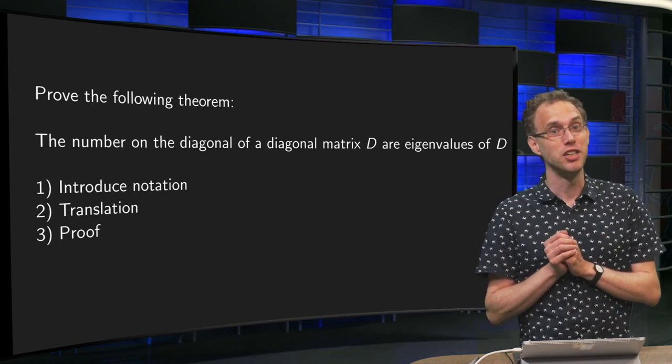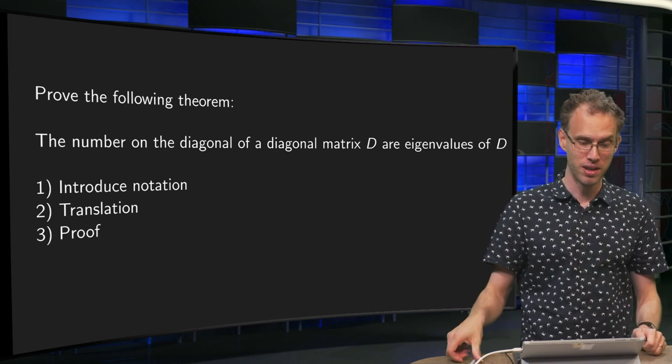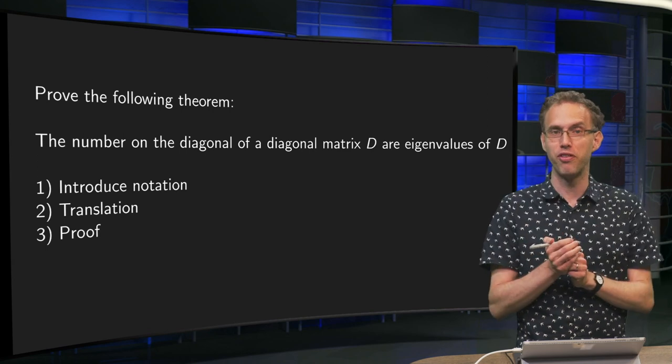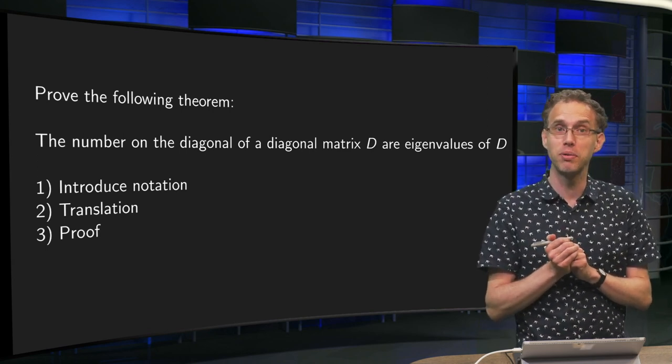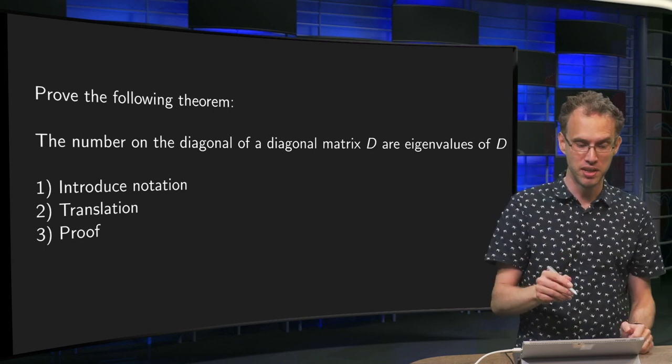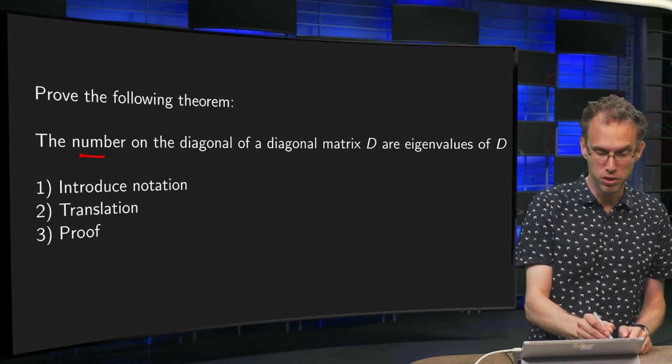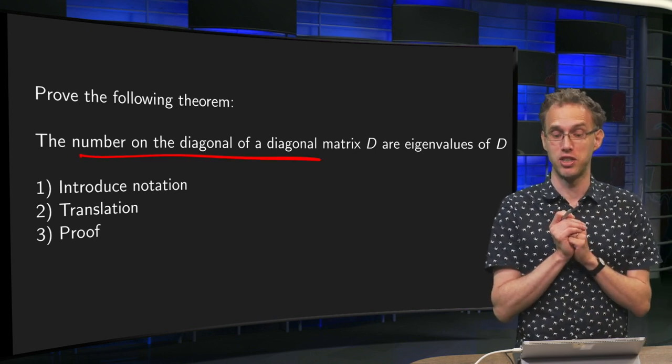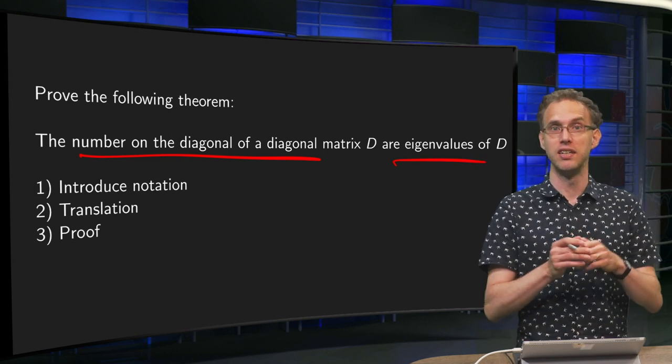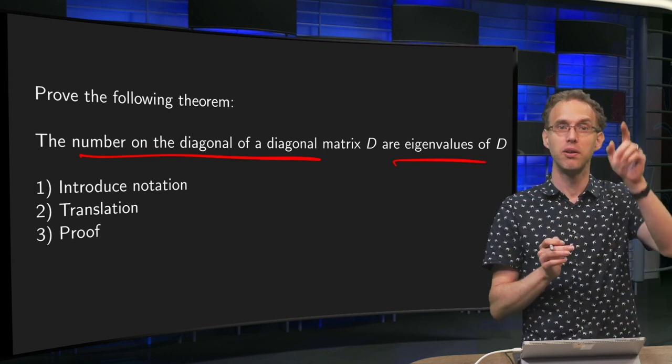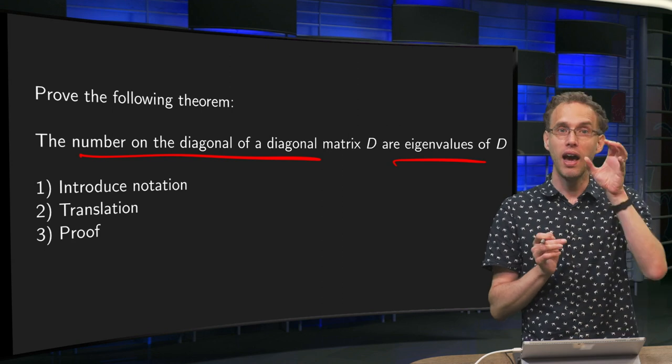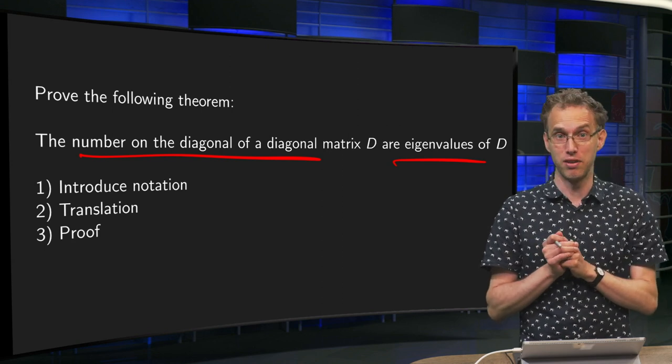Let us take a look at the procedure for the following example. We have an example of linear algebra just to show the whole procedure. We say that the numbers on the diagonal of a diagonal matrix D are all eigenvalues of D. We have some diagonal matrix D with some numbers on the diagonal, and all those numbers are eigenvalues of D.